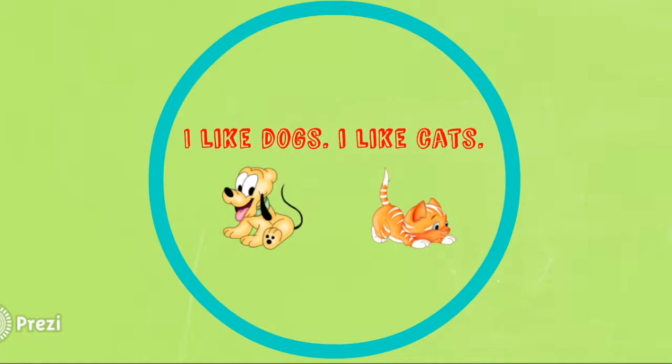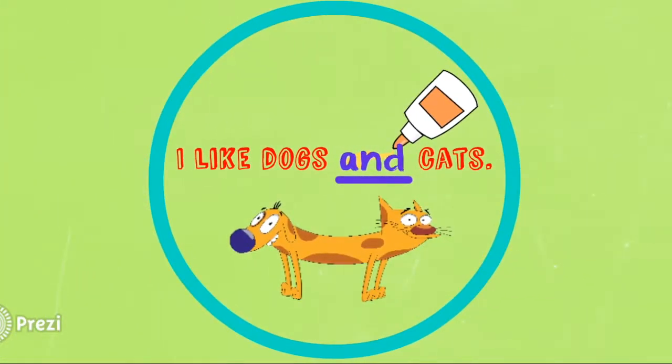These sentences say, I like dogs, I like cats. To combine these sentences, you would use the conjunction and to glue the sentences together to say, I like dogs and cats. Here you are addressing that you like two similar subjects in one sentence. You like both dogs and cats.